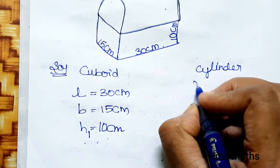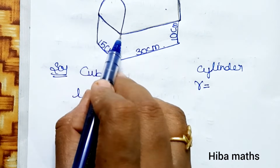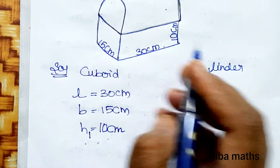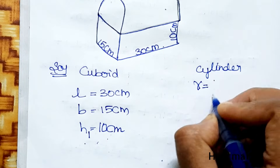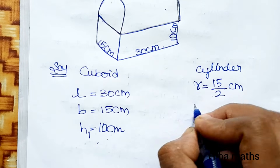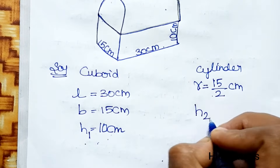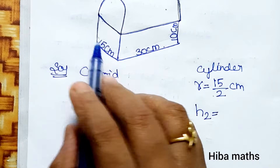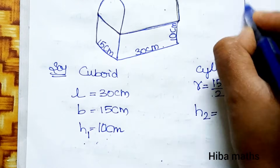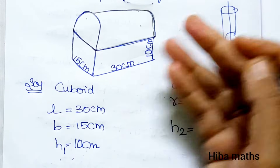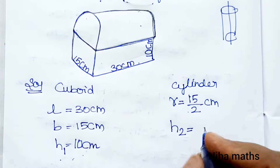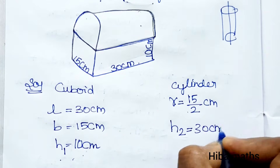Now for the cylinder: the breadth of the cuboid (15 cm) is the diameter of the cylinder. So radius r = diameter ÷ 2 = 15 ÷ 2 cm. The height of the cylinder h2 equals the full length of the cuboid, which is 30 cm.